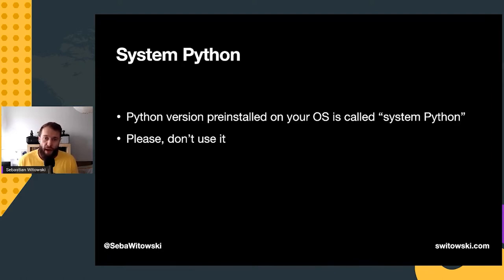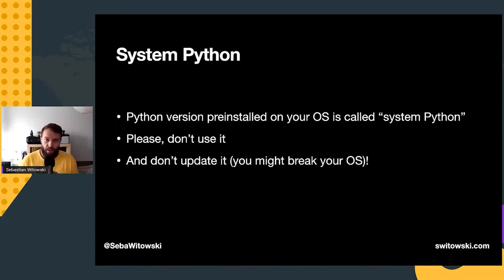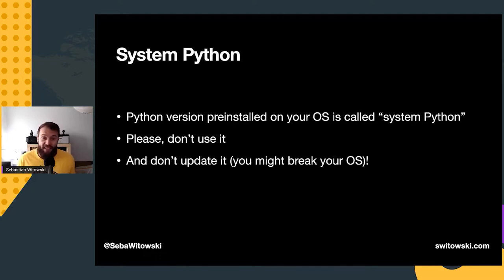No matter which system Python you have, I strongly suggest that you don't use it. In many cases, as we saw with macOS, it's terribly outdated — Python 2.7 is no longer officially supported by the core developers. You might be tempted to update system Python to Python 3, but you probably have programs on your computer that depend on Python 2.7. You would be surprised how many programs or even parts of the operating system still require Python 2.7 on macOS. If you update system Python, those programs will stop working.